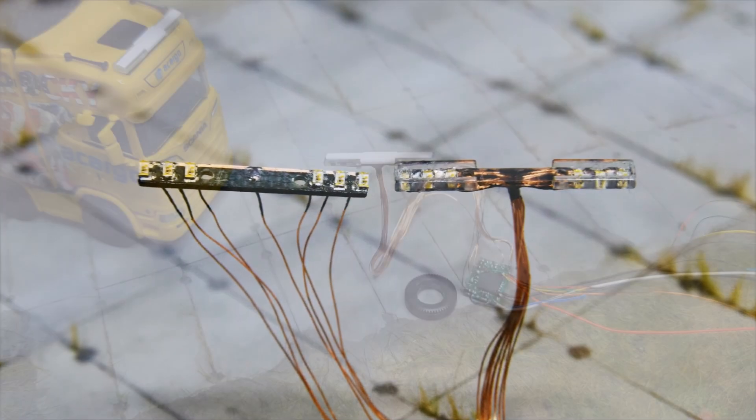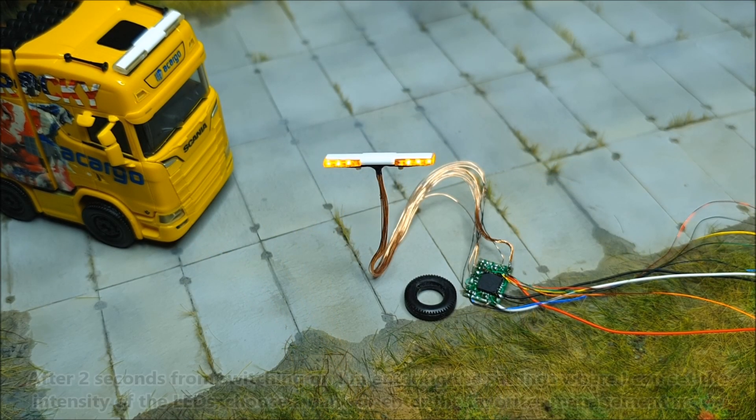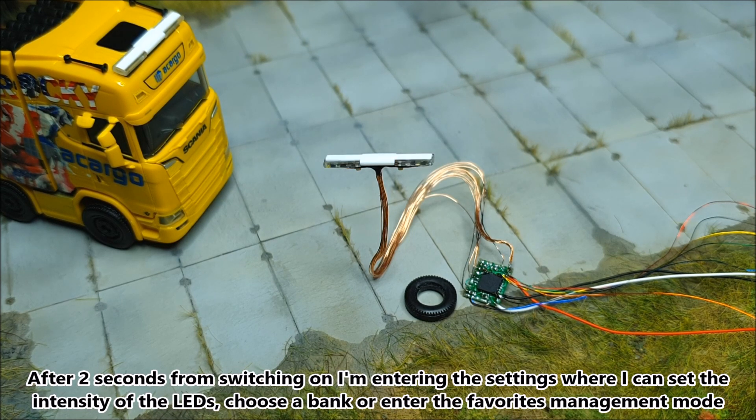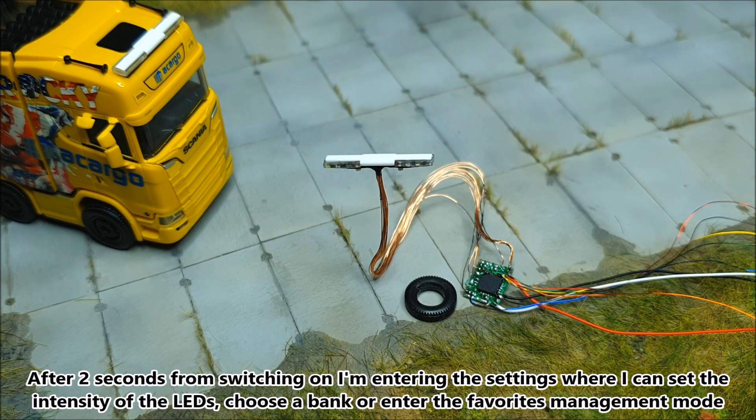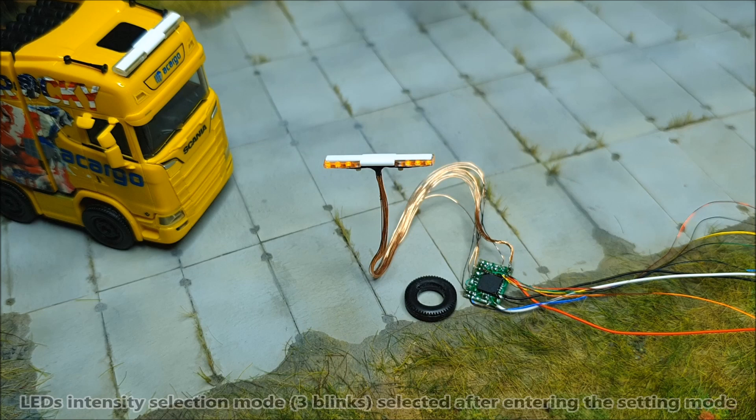Okay, now a small presentation of how it works. First I set the LEDs intensity by entering the settings. There are 7 levels of intensity and it might be useful while filming or taking pictures of the car.